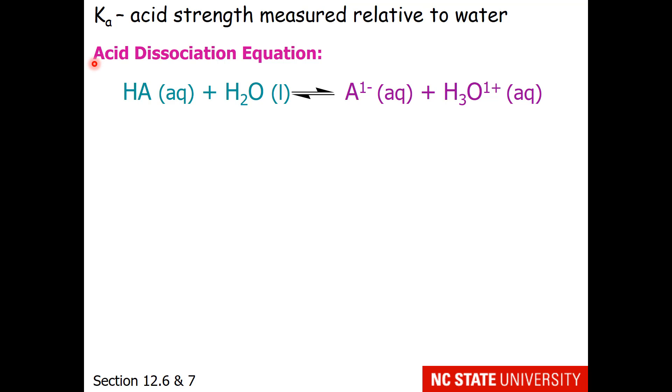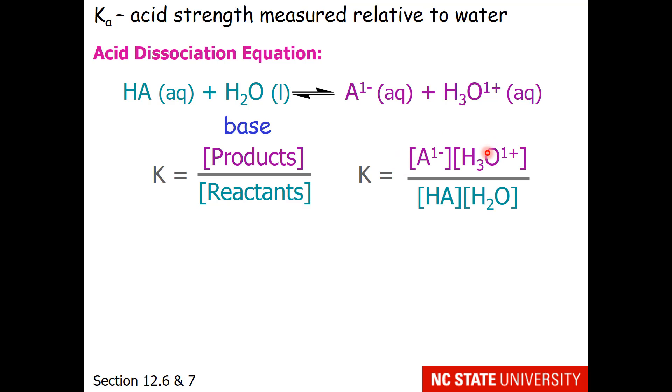So the general expression of the acid dissociation equation is some acid reacting with water to make the conjugate base and hydronium. Water is going to act as our base and as you know equilibrium constants are products divided by reactants raised to their coefficients.